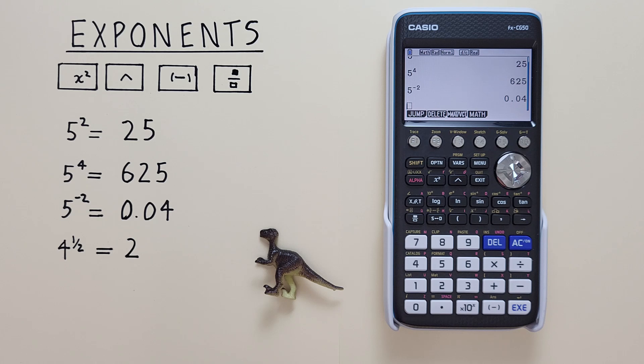We can also find exponents that are fractions, like for example, 4 to the power of 1 over 2. To do this we place the 4 on our screen, hit the up arrow key or caret key, so that we get our box, and then we press the fraction key here.